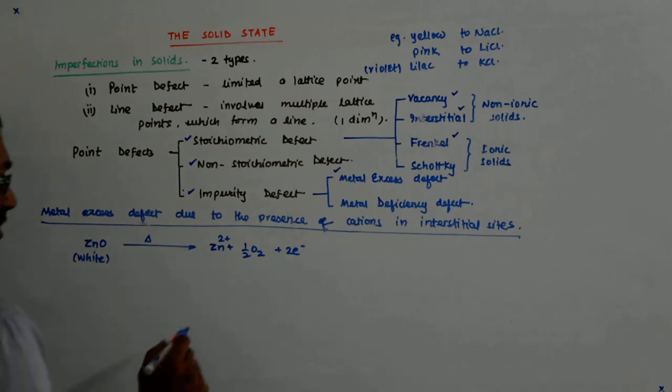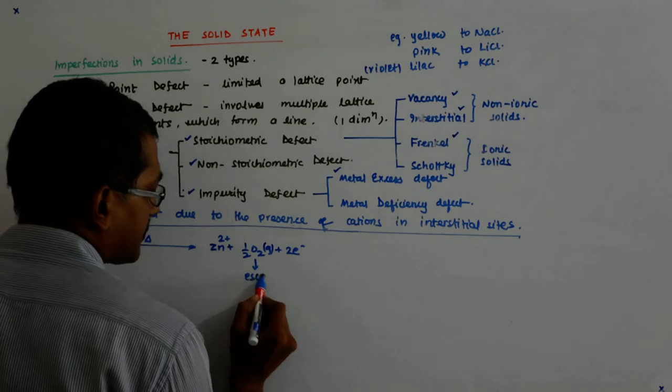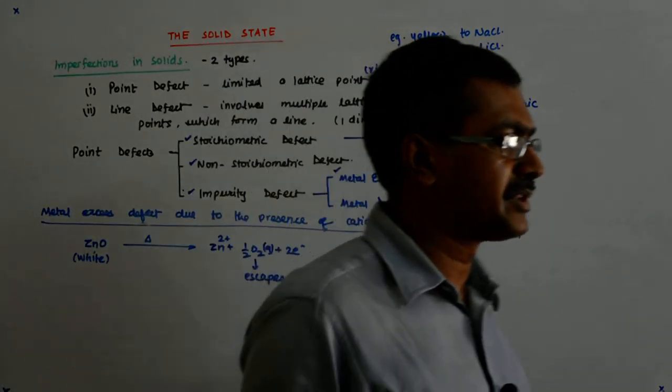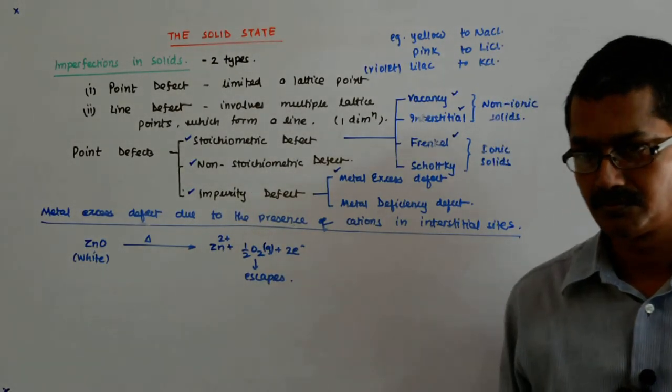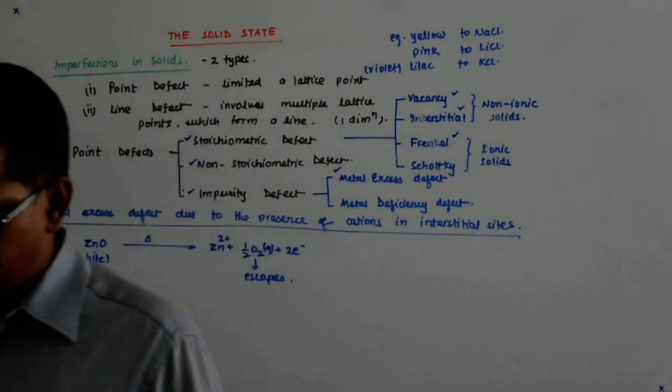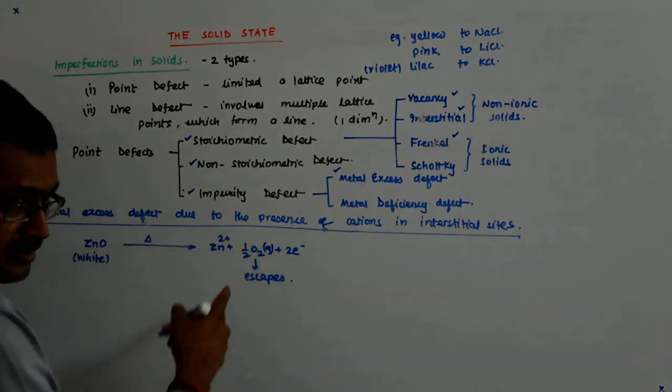And what happens? This oxygen, which is in the gaseous form, escapes. So what happens due to this? There is an excess of metal over the oxygen.